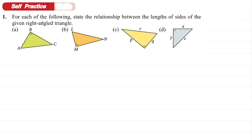For each of the following, state the relationship between the lengths of the sides of the given right angle triangle. For A: AC squared equals AB squared plus BC squared. For B: LN squared equals LM squared plus MN squared.